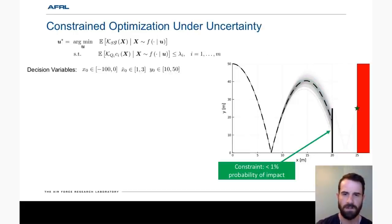For chance constraints, let's consider adding a wall at x equals 20. Here is showing the trajectories from the previous optimal solution. But here we want to now minimize the expected square miss distance from the star, but only consider solutions that have less than one percent chance of impacting the wall.